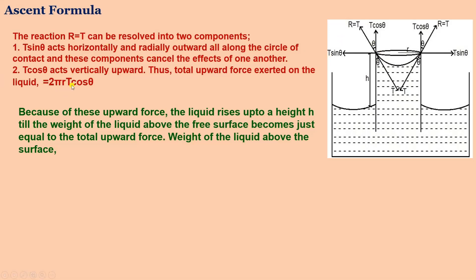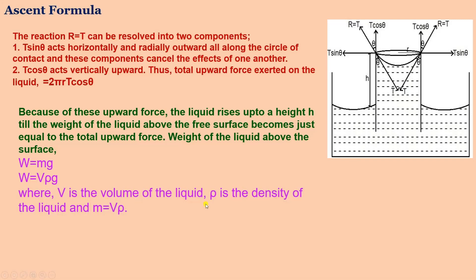The total upward force exerted all along the circumference equals 2πr × T cosθ. Under this upward force, liquid rises in the tube to height h until the weight of the liquid column above the free surface equals the total upward force. The weight W = mg = Vρg, where V is the volume of liquid and ρ is the density. The volume V = πr²h, so W = πr²hρg.